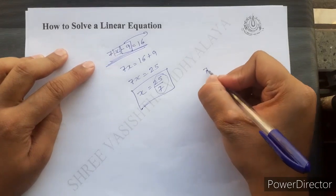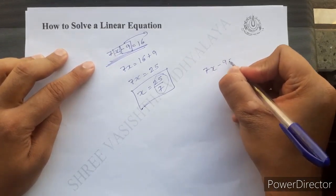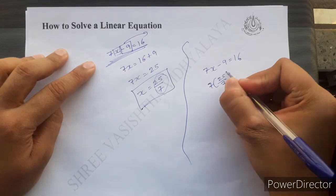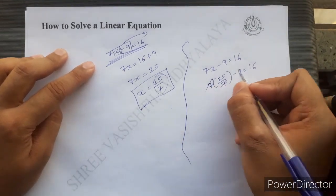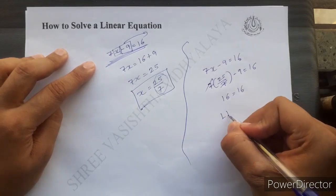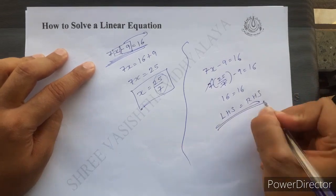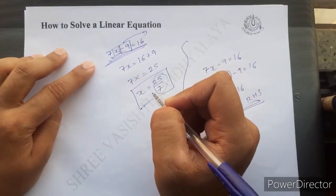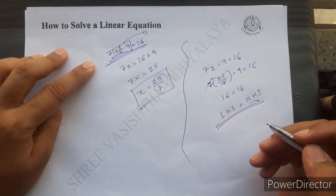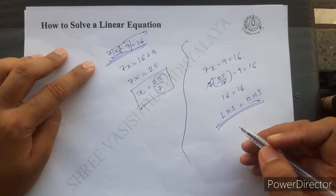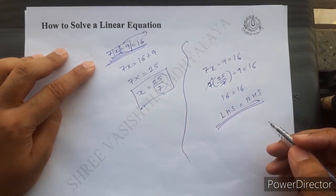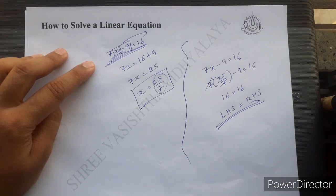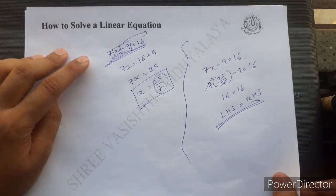We can verify the answer by substituting back: 7x minus 9 equals 16. Putting x equals 25 by 7: 7 multiplied by 25 by 7 minus 9 — the 7s cancel, giving 25 minus 9 equals 16, which equals 16. So LHS equals RHS, confirming the answer is correct. If you want to check any answer, put that value in place of x — if LHS equals RHS, the answer is correct; if not, it is wrong.